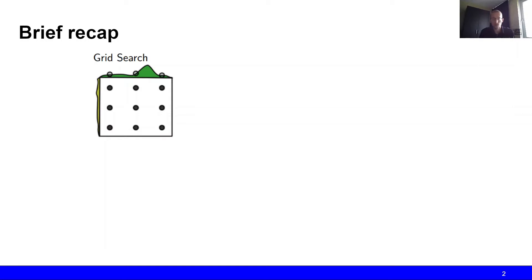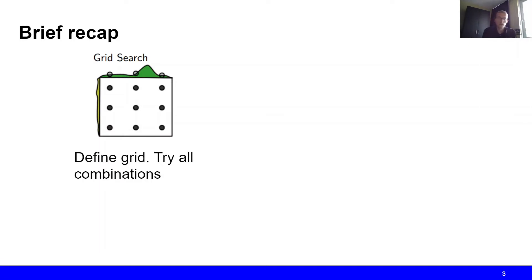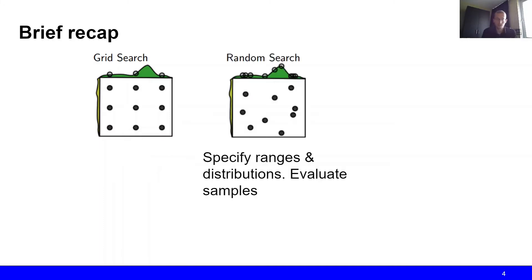One of these methods was grid search, where we simply specify the hyperparameters over which we want to search, as well as define a grid of values that we want to try out for every hyperparameter, and then we simply evaluate all possible combinations. An even simpler approach is random search, where instead of specifying values for every hyperparameter, we specify ranges and associated distributions, and then we sample configurations according to this distribution and evaluate them.